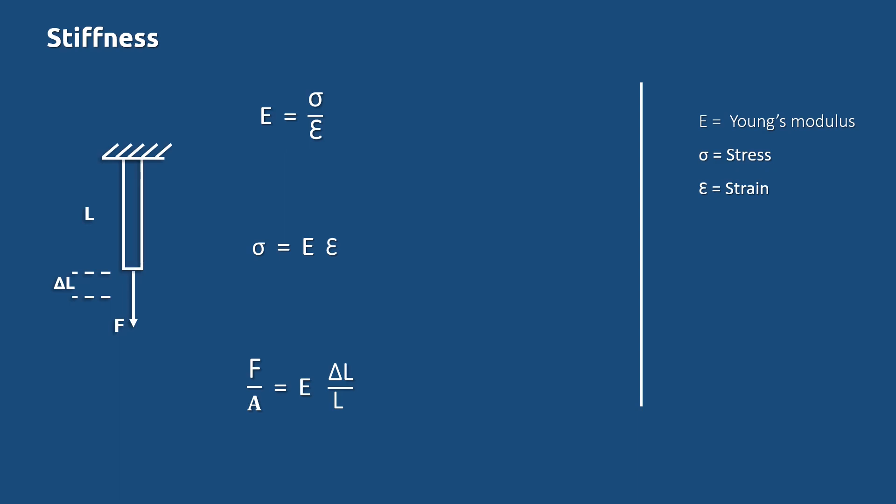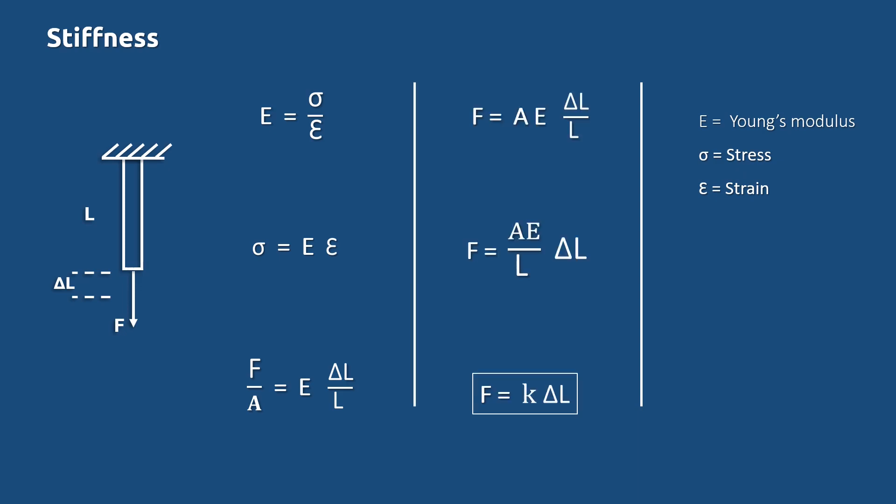So F divided by A equals E times delta L divided by L. We need to find the relation between force and displacement produced. Rearranging: force F equals AE times delta L divided by L, or F equals (AE/L) times delta L. Here, force equals some constant times displacement, which is similar to F equals K times U. This constant AE/L is known as the stiffness of the bar, which depends on the area of cross section, Young's modulus, and length of the bar.